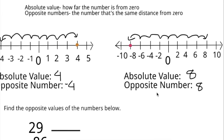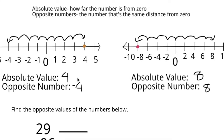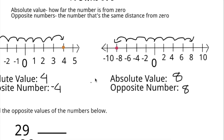So a pattern you'll notice is that the absolute value is just the number made positive. So four, since it's already positive, it stays four, and negative eight turns into eight — it got turned positive. And then for opposite numbers, you just switch the signs. So positive four turned into negative four and negative eight turned into positive eight.